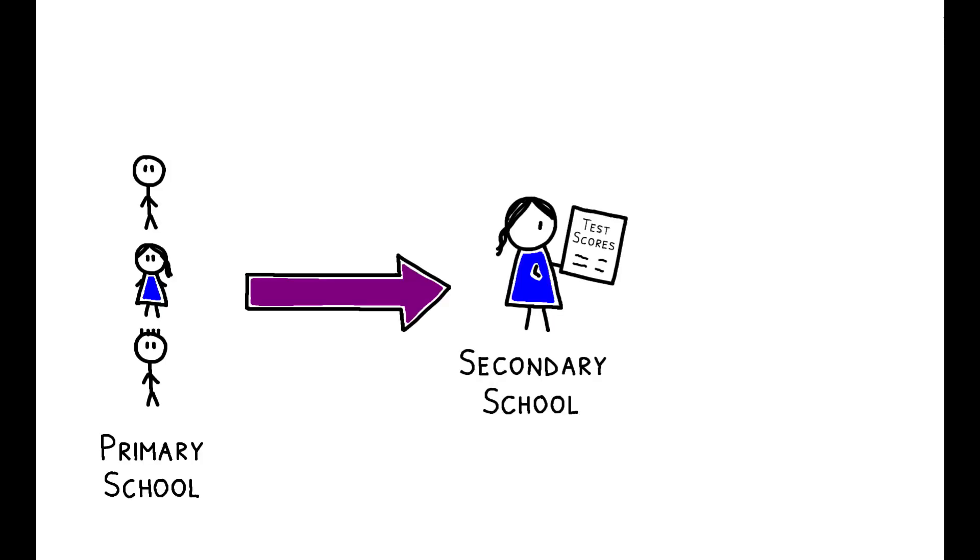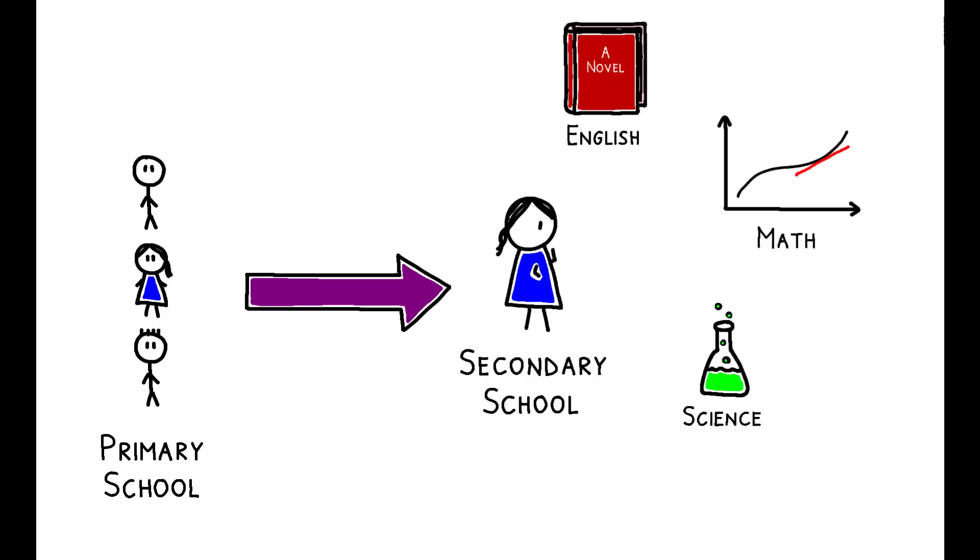Beyond academic achievement, rank also affects what students specialize in at the end of secondary school. Being top-ranked in a subject in primary school, rather than at the median, increases the probability of specializing in that subject by 20%.